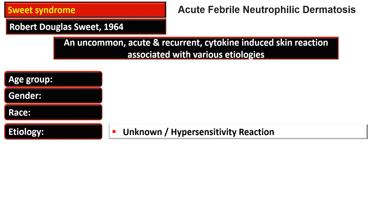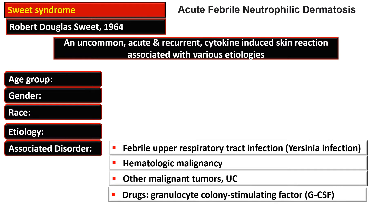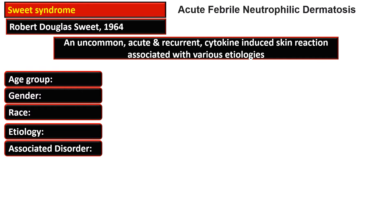The etiology is unknown, but various genetic or immunological hypotheses exist for the etiology of this disease. The associated disorders include febrile upper respiratory tract infection, and this condition is especially associated with Yersinia infections. It is also associated with hematological malignancies, especially myeloid leukemia or transient myeloid proliferation, ulcerative colitis, many other malignant tumors, and use of drugs — especially granulocyte colony stimulating factors.